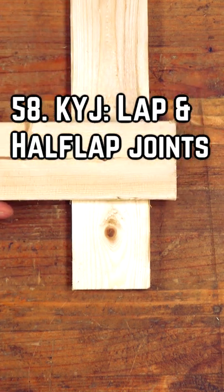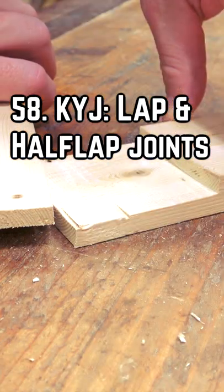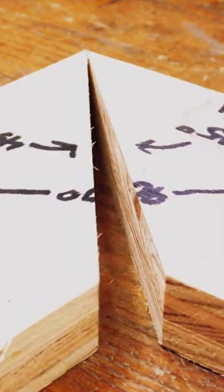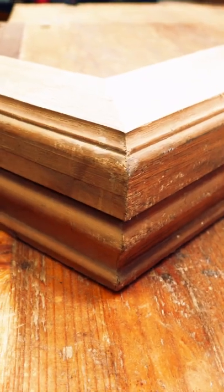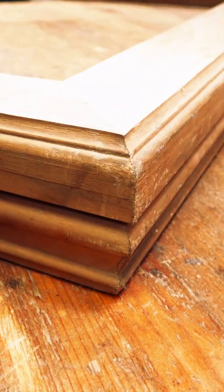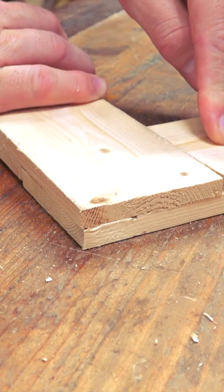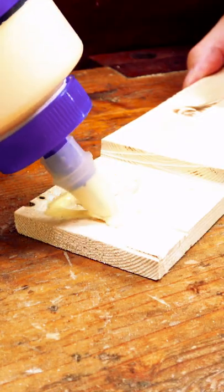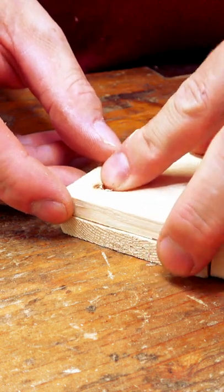Lap joints are simply two boards that overlap each other. They're not particularly beautiful to look at, but they're much stronger than trying to glue two end pieces together, as we talked about in number 47. Unlike 47, the end grains will be visible, but you're getting real estate and surface area for your glue that will give you a stronger bond.